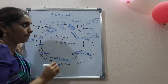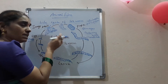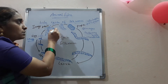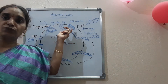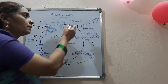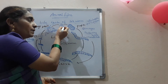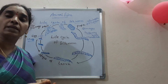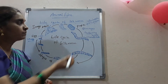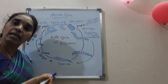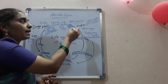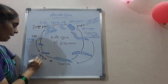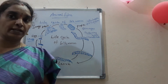If the pupa transforms into the adult stage, the silk thread that is formed will not be continuous, because the larva pierces out of the cocoon body when it becomes an adult. So in order to get a continuous silk thread, the larva present inside the cocoon is killed. The process of killing the larva inside the cocoon is called the stifling process.